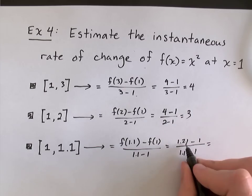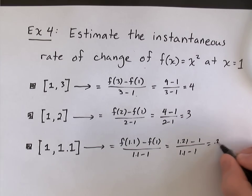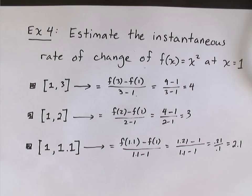So, that's 21 hundredths over 1 tenth. And that's equal to 2.1. Okay?